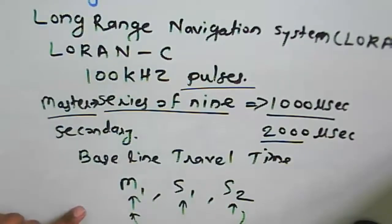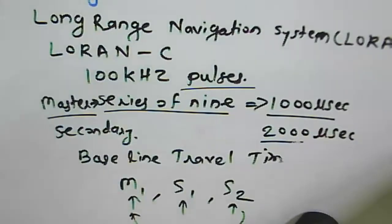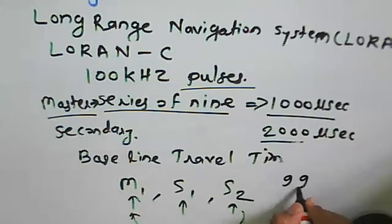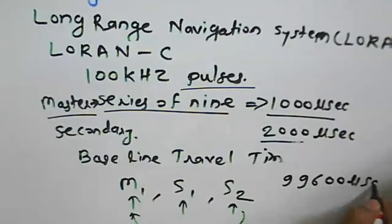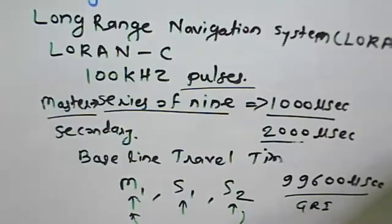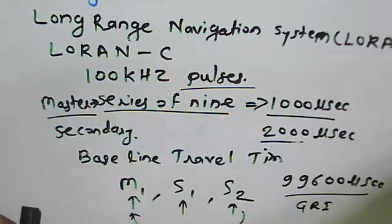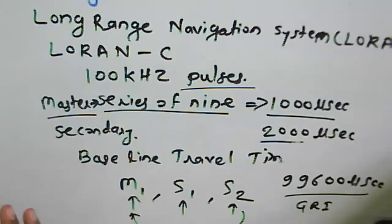The Group Repetition Interval for a given LORAN chain is generally 99,600 microseconds. The total GRI depends on how many masters and secondary stations are involved in the system. The baseline is the geographical line connecting a master to a particular secondary station, and the baseline extension continues beyond each station.